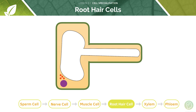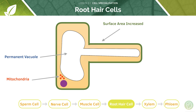Now let's take a look at some examples in plants. Root hair cells are required for absorption of water and mineral ions in plant cells. They're found on the surface of roots and are involved in absorption of water and mineral ions from the soil, which the plant needs for photosynthesis and survival. Therefore, root hair cells must be adapted for absorption, because that's their key function.